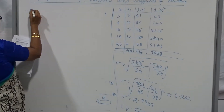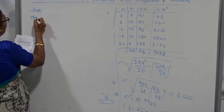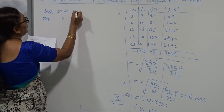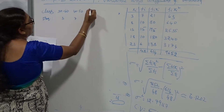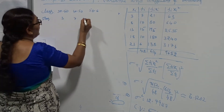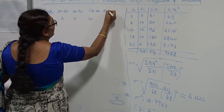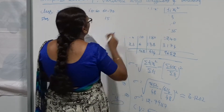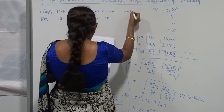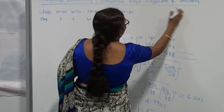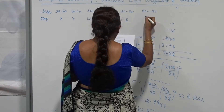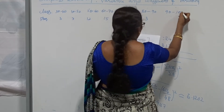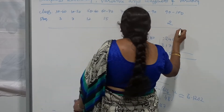The data for the continuous frequency distribution: the class intervals and corresponding frequencies are — 30 to 40: frequency 3; 40 to 50: frequency 7; 50 to 60: frequency 12; 60 to 70: frequency 15; 70 to 80: frequency 8; 80 to 90: frequency 3; 90 to 100: frequency 2. This is the data they provide — this is an exclusive class interval.